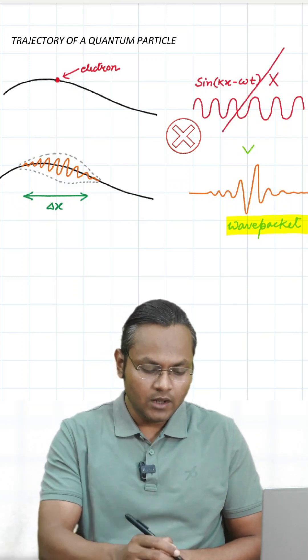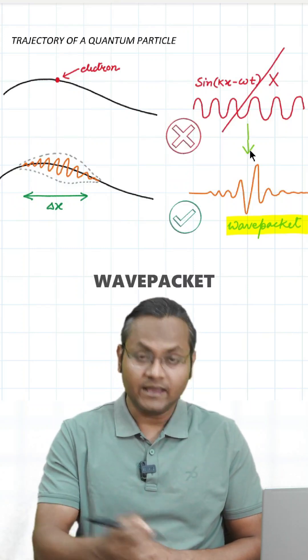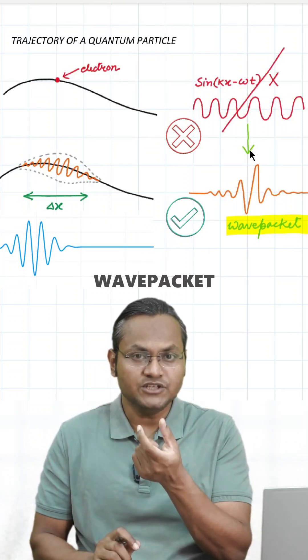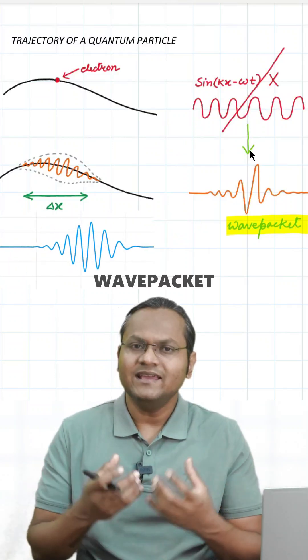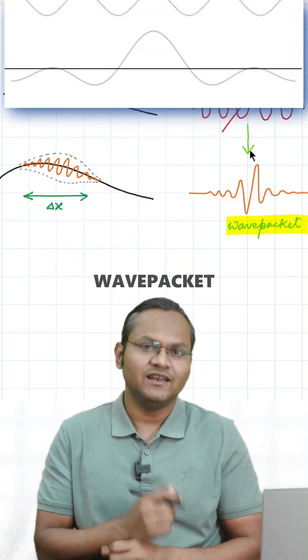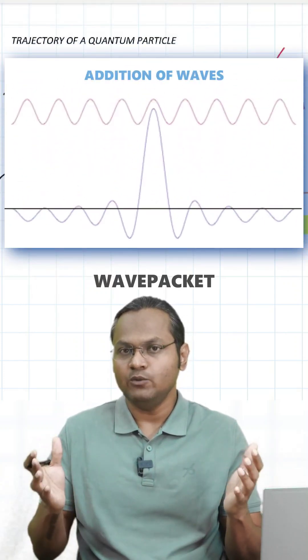Instead, we use something called a wave packet which has a finite amplitude in a small region in which the particle exists. लेकिन इस wave packet को generate करने के लिए we need to add a large number of sine waves with different wavelengths.